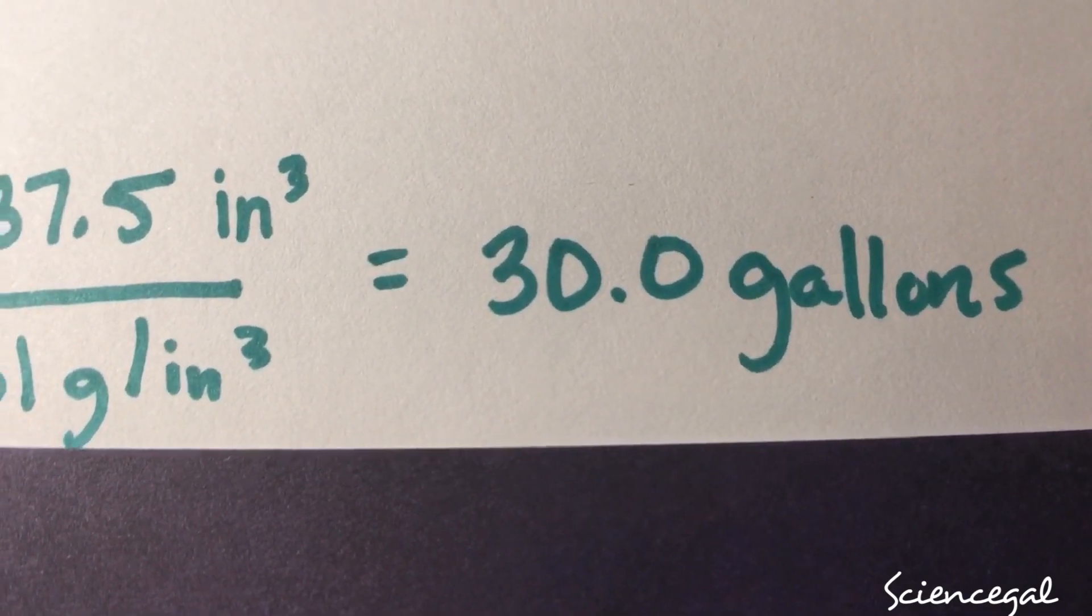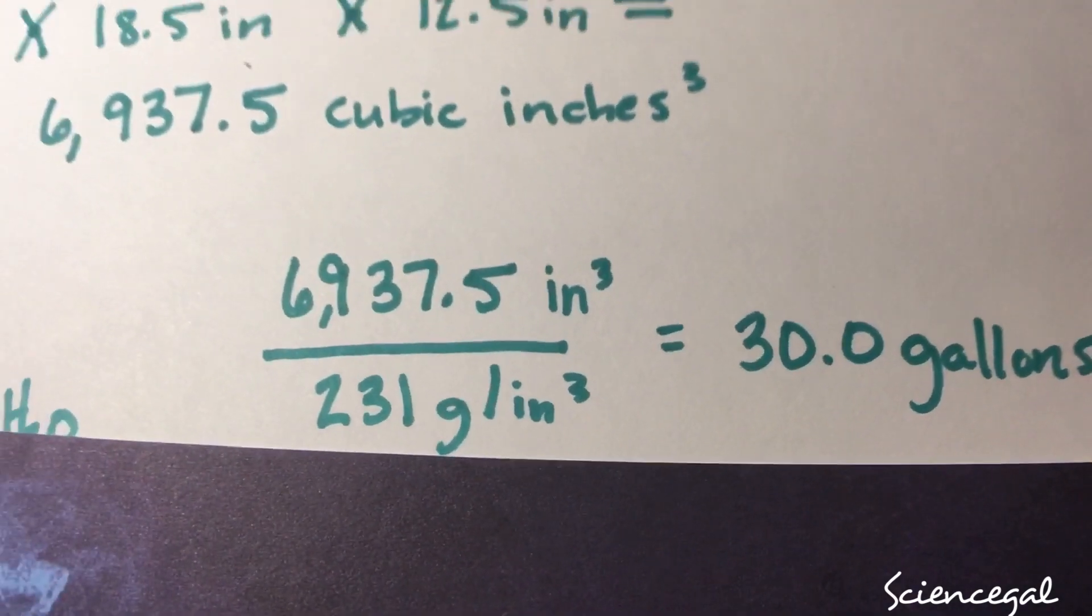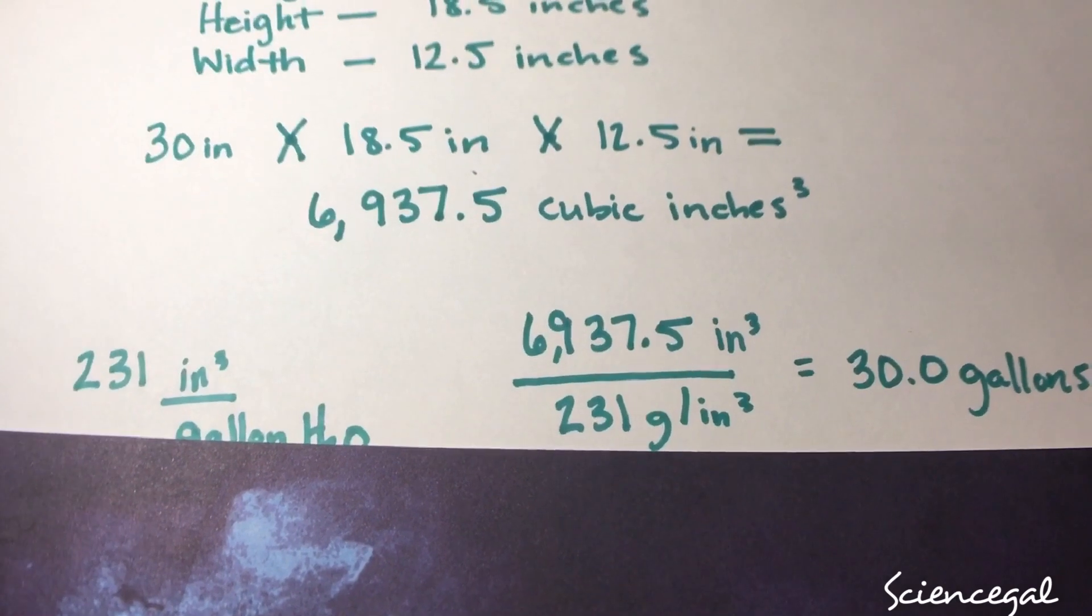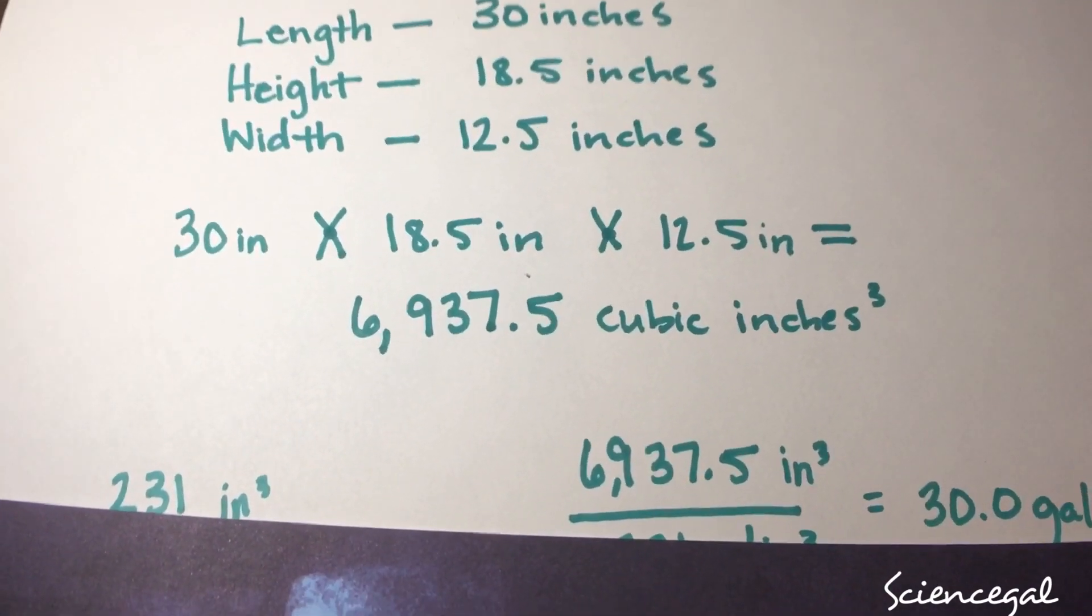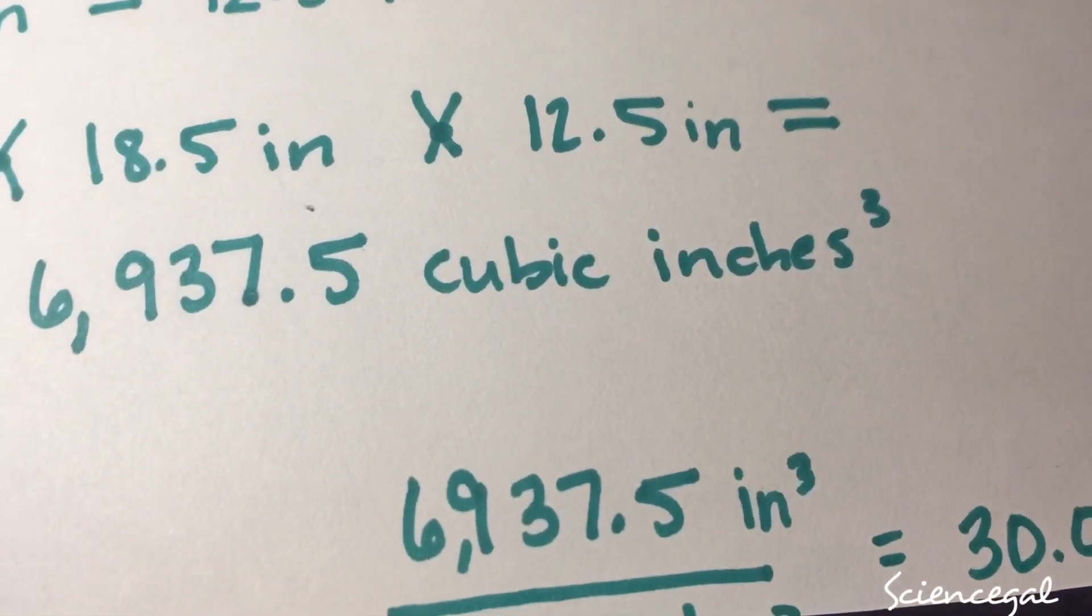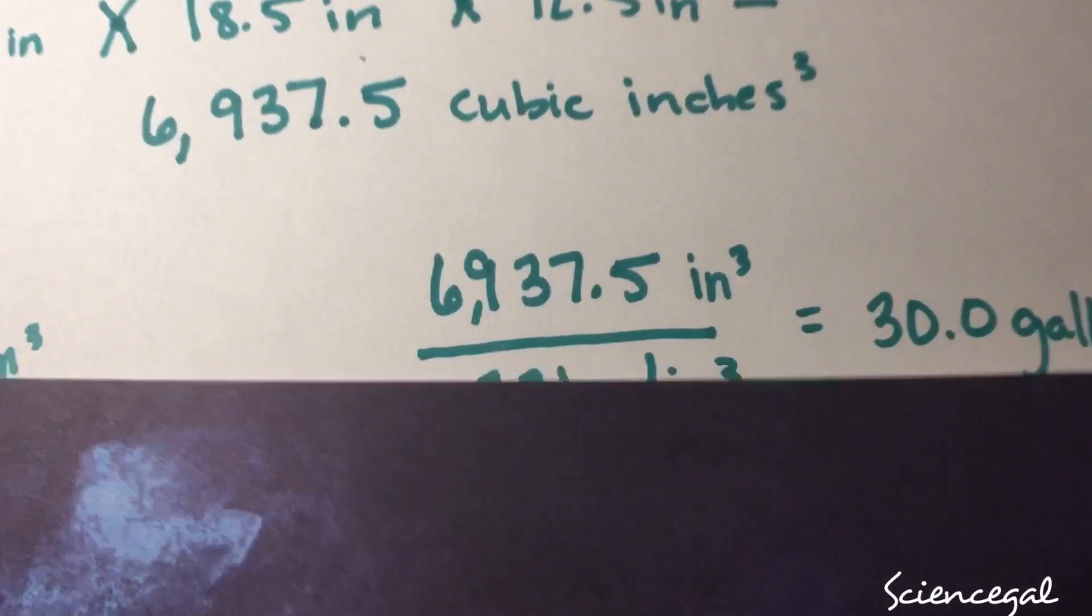So that's the equation that you need to know for calculating water volume. Just take your length times your height times your width - it's going to give you your cubic inches - and then divide that whole thing by 231.